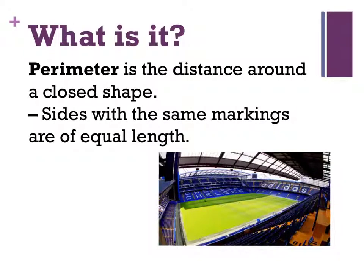Perimeter is the distance around a closed shape. Sides with the same markings are of equal length. So if you look at Stamford Bridge Stadium here, if I wanted to measure the perimeter of the field, I would go around the outside. It's the distance around the outside of a closed shape.